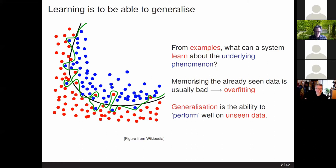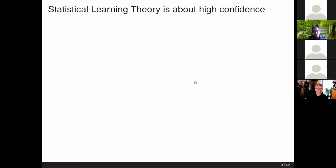Generalize means perform well on data we haven't yet seen, and that's the important question: how do we analyze performance on unseen data? Statistical learning theory attempts to do that, taking into account that the training data is generated randomly. We think of a distribution generating our data, we see a sample drawn typically IID, and we hope that what we learn will perform well on new data from the same distribution.